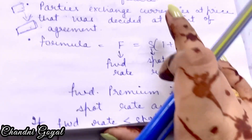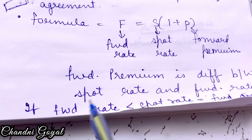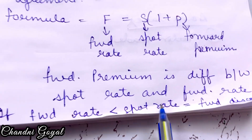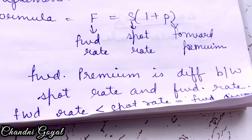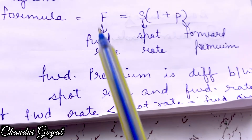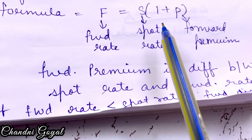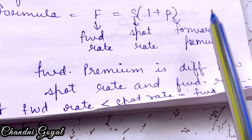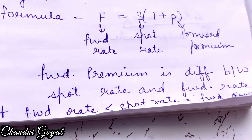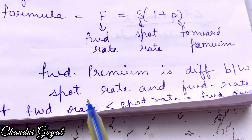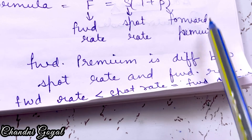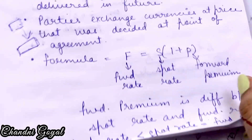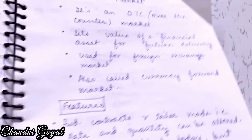If the forward rate is higher and the spot rate is lower, it is called forward premium. But if the forward rate is lower and the spot rate is higher, it is called forward discount. I hope this is clear.